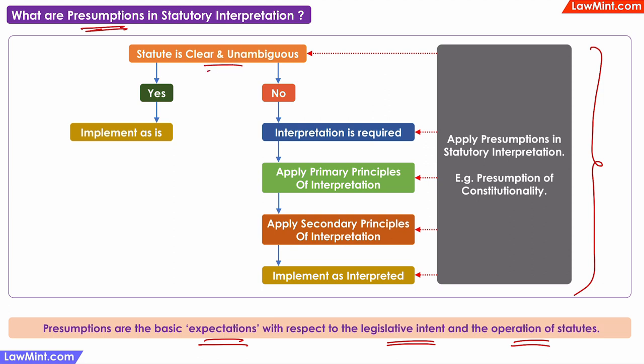For example, if a statute is clear and unambiguous, then there is no need for interpretation — it should be implemented as is. If interpretation is needed, the primary principles such as the literal rule and the golden rule are applied first. If required, the secondary principles are applied next to fine-tune the interpretation. Presumptions are applied at every step of this interpretation process.